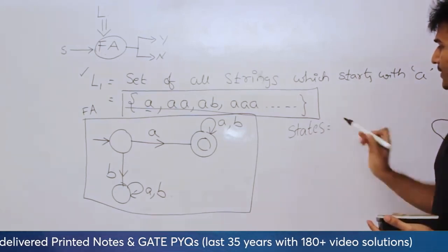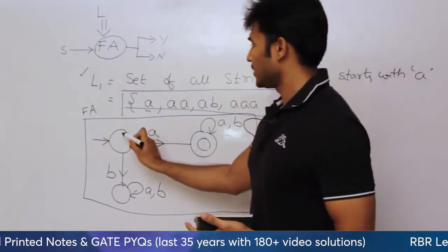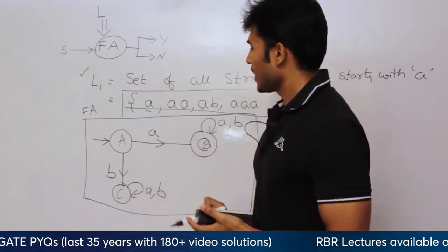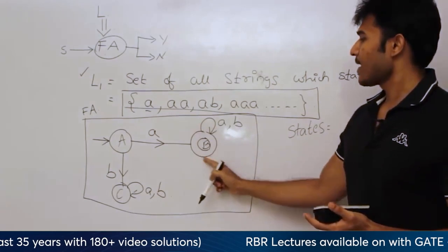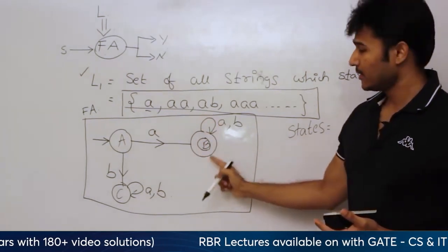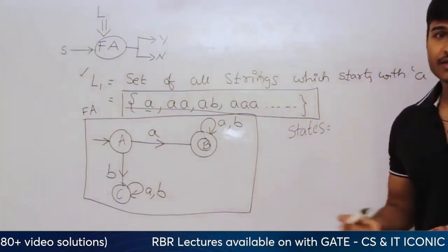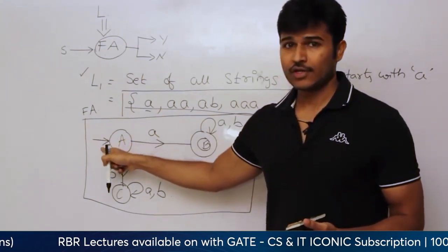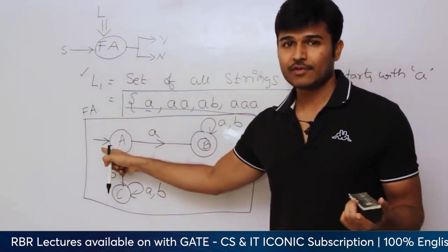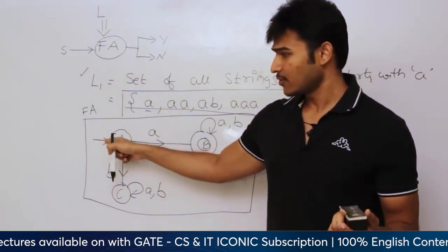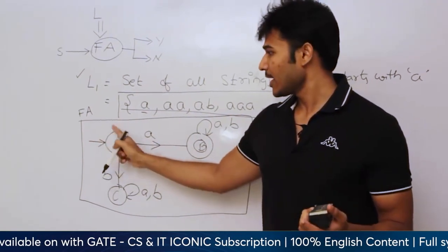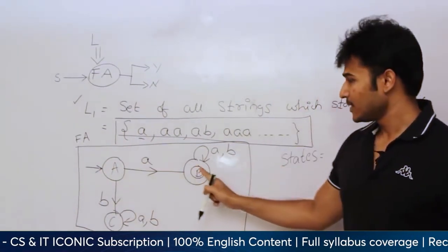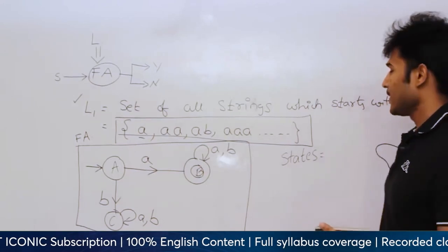In this case we have states A, B, and C. Whenever a circle has a double circle I call it a final state. Whenever a circle has an arrow to its left not coming from anywhere, I use that arrow to represent the initial state. So the initial state is A and the final state is B.